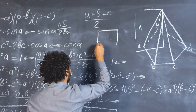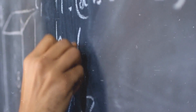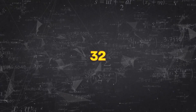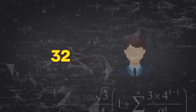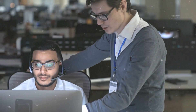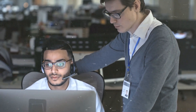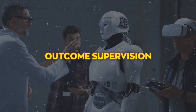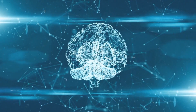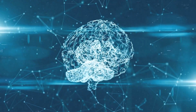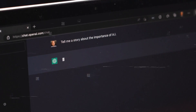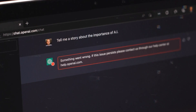Each of these steps is correct according to human logic and math rules. Therefore, each step would receive positive feedback from a human supervisor. The final answer, 32, is also correct, so it would also receive positive feedback. Now, let's say we want to train an AI model using outcome supervision instead of process supervision. Outcome supervision only provides feedback based on whether the final answer is correct or not — it doesn't care about how the model arrived at that answer or whether it followed any logical steps along the way.